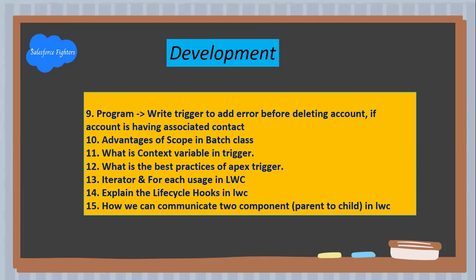Now, developer job profile related questions: First question — write a trigger to add errors before deleting an account if the account has associated contacts. Next question: What is the advantage of scope in a batch class? Next question: What are context variables in triggers?